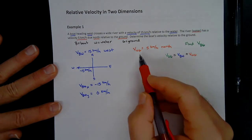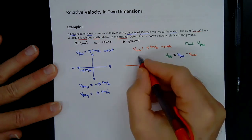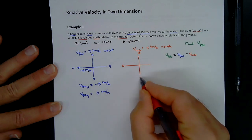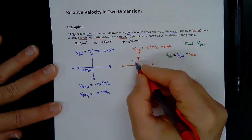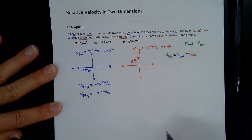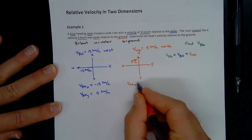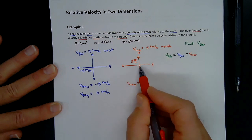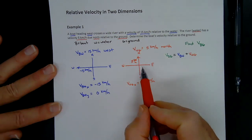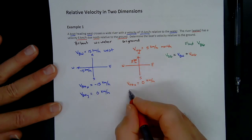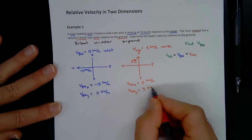Now for the river vector: 5 kilometers per hour north. North is the positive y-direction. Since it's going directly north, there's no horizontal component and all vertical. So V sub WGx equals zero kilometers per hour, and V sub WGy equals positive 5 kilometers per hour.